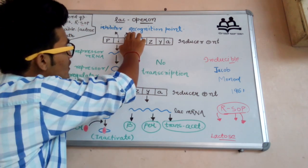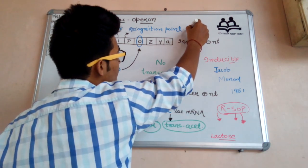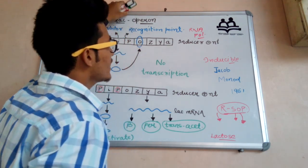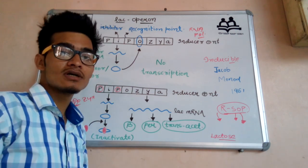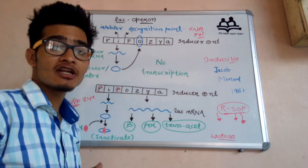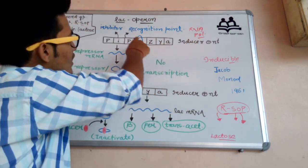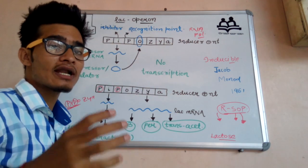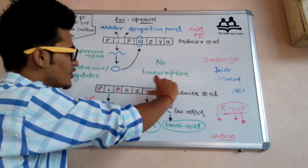The P gene is the promoter gene, also known as the recognition point. It is called the recognition point because RNA polymerase, which is responsible for the formation of mRNA, recognizes and binds here. Since we are talking about the formation of different kinds of proteins, DNA will first get converted into mRNA — this process is facilitated by RNA polymerase.